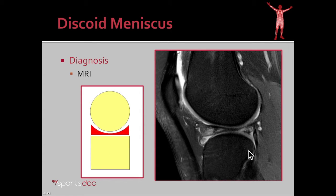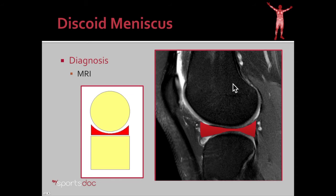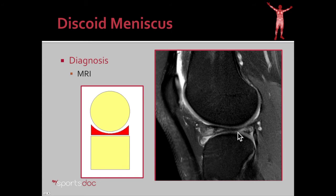Here you see on MRI what that looks like. You have the round femur, the relatively flat tibia, and you can see this black structure is the meniscus going all the way across the joint. The weight of the body is going 100% through the meniscus with every step. You can also see that the meniscus has started to tear — the little white areas here and here. The meniscus is not able to support that load forever and so ultimately it tears and causes pain.